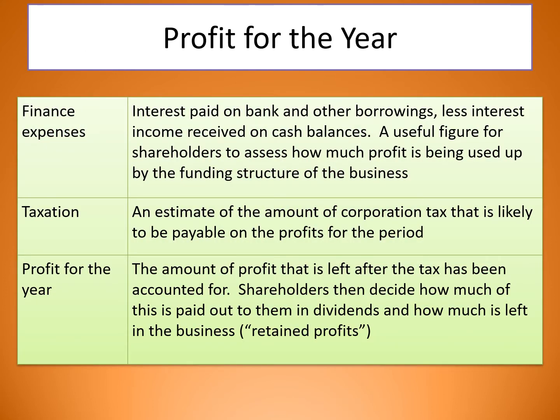Then we've got finance expenses: interest paid on bank and other borrowings, less interest income received on cash balances — how much interest you're paying compared to how much is being paid back to you. This is a useful figure for shareholders to assess how profit is being used up by the funding structure. Then taxation — an estimate of corporate tax payable on the profit — and that gives us profit for the year: the amount of profit left after tax has been accounted for.